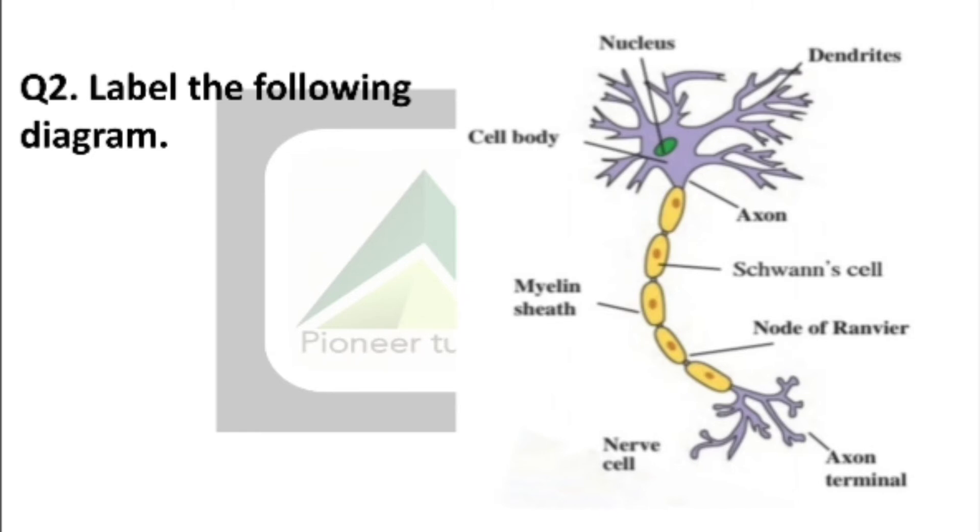Then as you go down, it is Axon. Then Schwann cell. Then node of Ranvier at the bottom. Axon terminals.